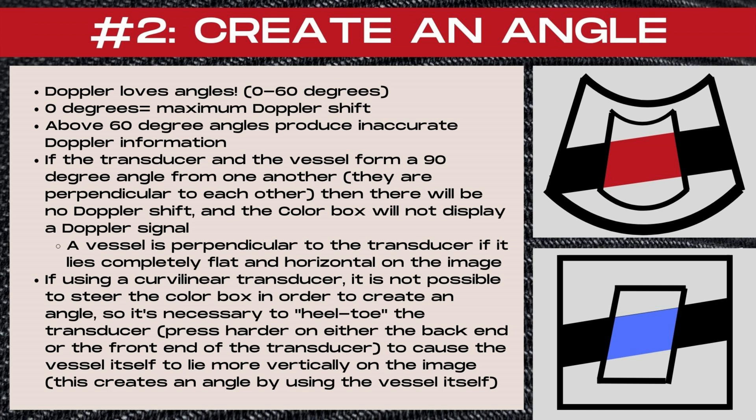The next step to properly optimizing a color Doppler image is to create an angle. It's crucial to know that Doppler loves angles, but it doesn't love all angles equally — it loves angles from 0 to 60 degrees. At 0 degrees, the maximum Doppler shift is going to occur. Above 60 degrees produces inaccurate Doppler information, and at 90 degrees there's no Doppler shift information. If the transducer and the vessel form a 90-degree angle, they are perpendicular, and the color box will not display a color signal. You know your vessel is perpendicular to the transducer if it lies completely flat and horizontal on the ultrasound image.